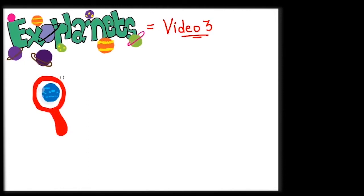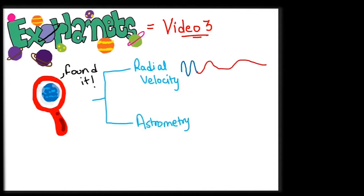This is the third video in the series Exoplanets where we discuss how exoplanets are hunted for by using the radial velocity method and astrometry. Both these methods involve the mutual motion of a star and a planet around the common center of mass which is also called the barycenter.